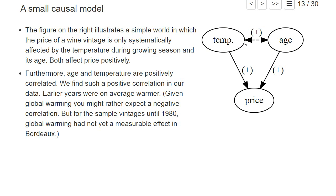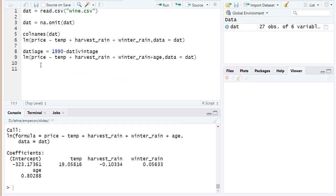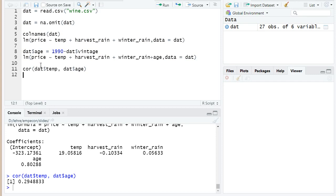We will see in our dataset that age and temperature are positively correlated. Let's look at the data in R. If I write cor, which stands for correlation between temperature and age of each vintage, we find a positive correlation of 0.29. It's not too strong but also not too small, meaning older vintages that have higher ages were systematically grown at warmer temperatures.